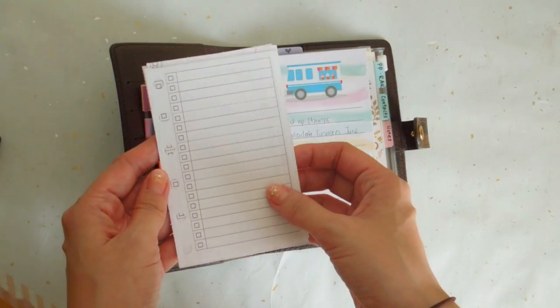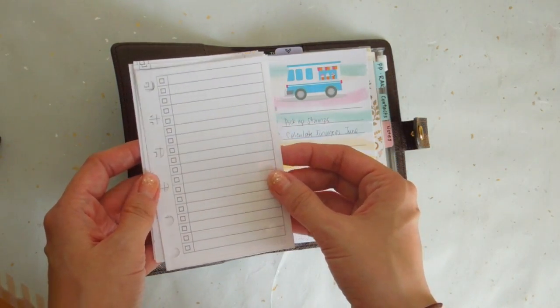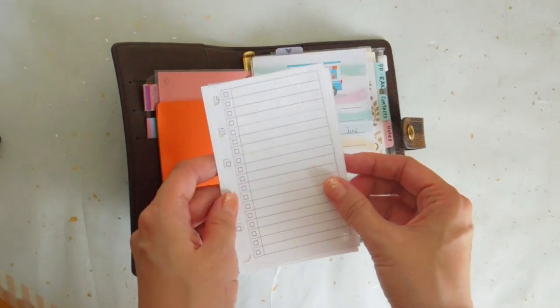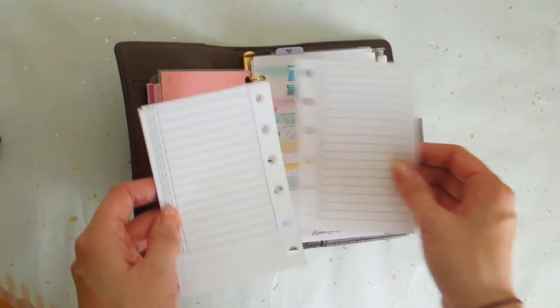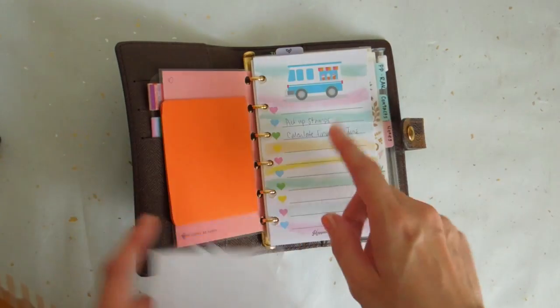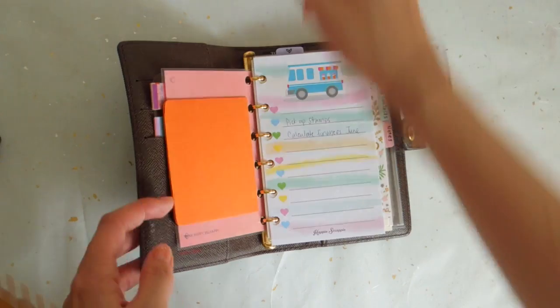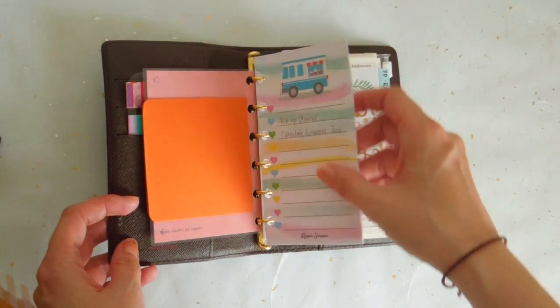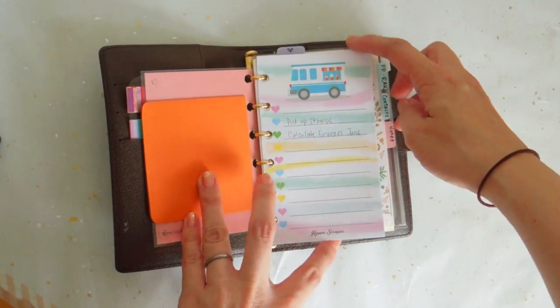In the beginning I printed these pocket size to-do lists, and the sizing wasn't matching. I had to cut it off, and I didn't like it. So I switched out to the happy scrappy notepaper that was included in this month's kit, and it's perfect sizing for the pocket size agenda.